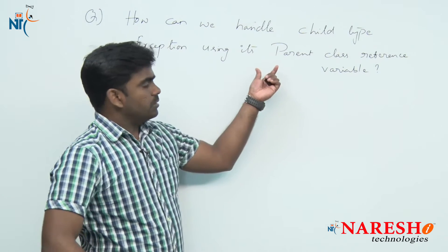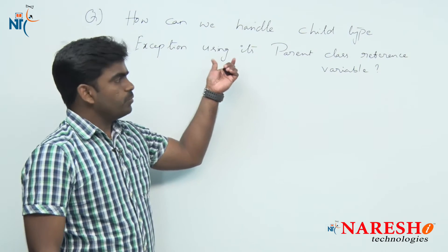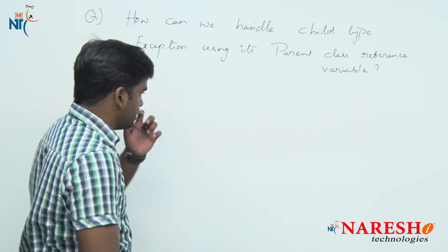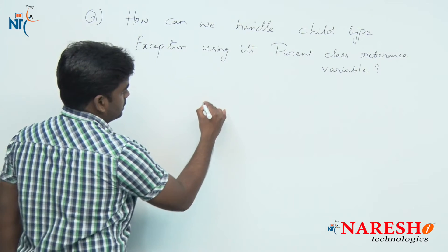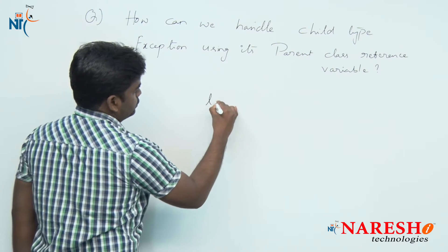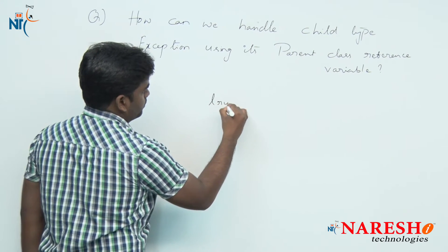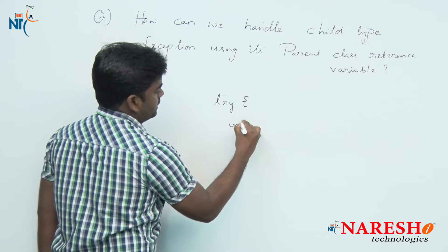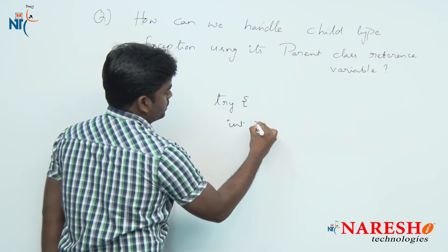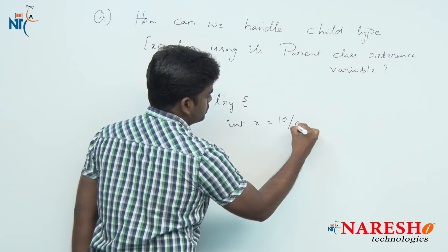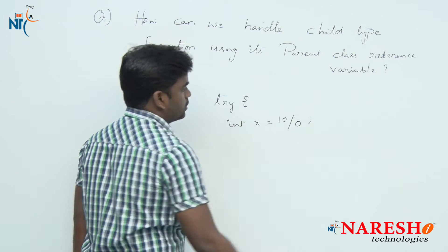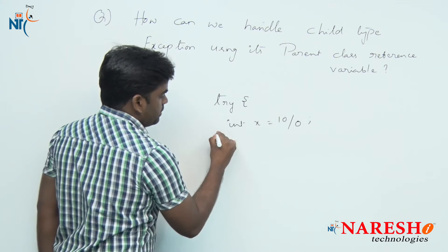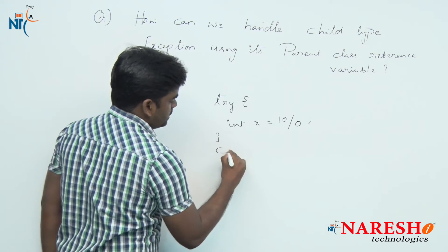First of all, using one program I will explain this clearly. For example, in the try block I will write a simple logic like int x = 10 / 0. I am directly writing hard-coded values, so there is a chance of getting an ArithmeticException.